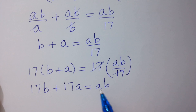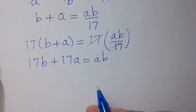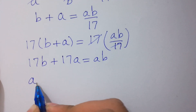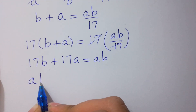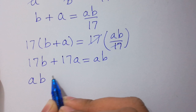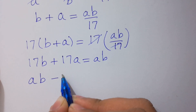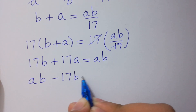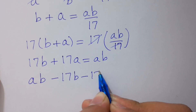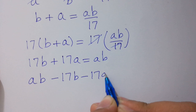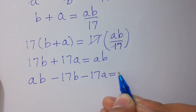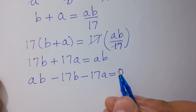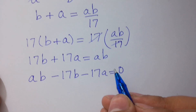This is the same as ab minus 17b minus 17a equals 0.